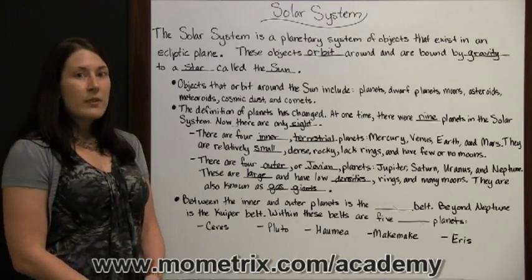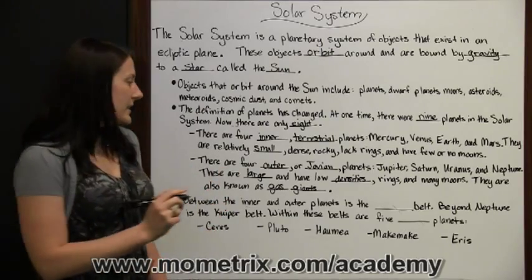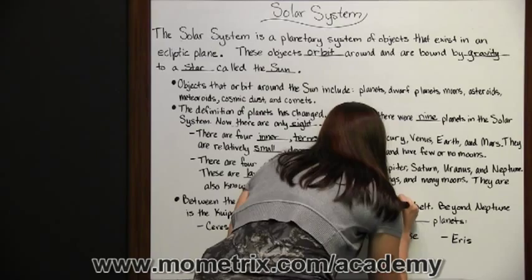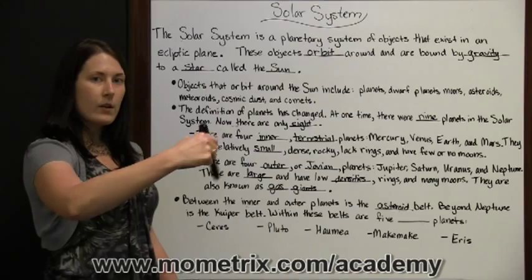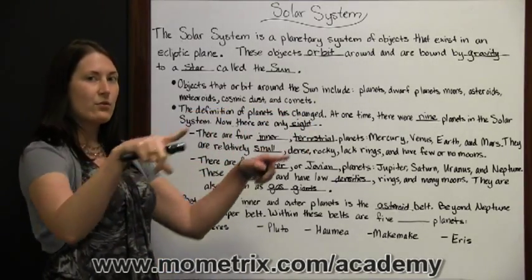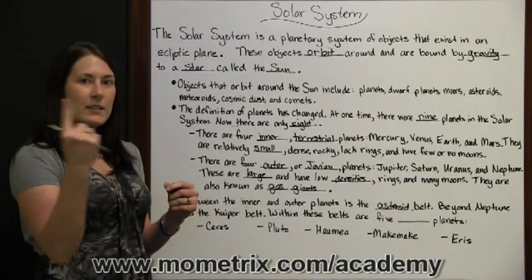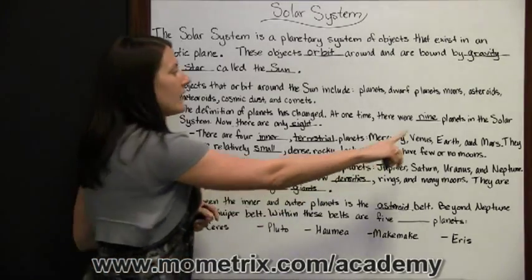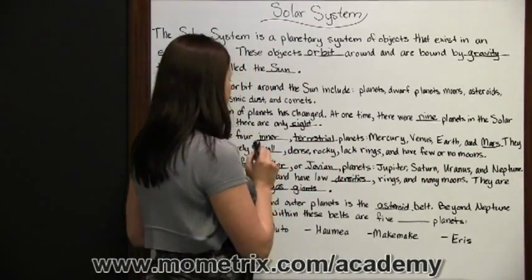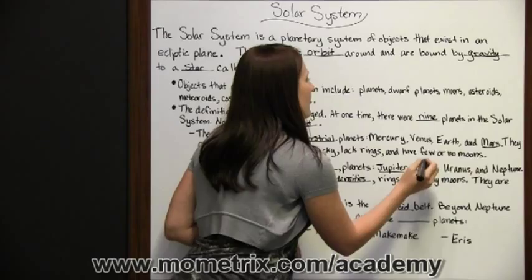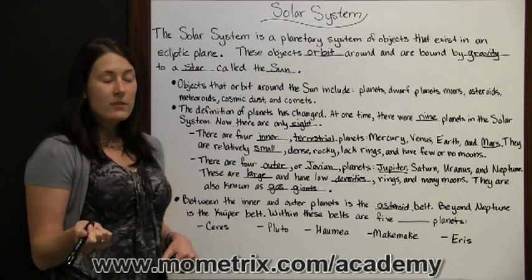Between the inner and outer planets is the asteroid belt, which also orbits the Sun. It sits between the orbits of Mars — the furthest inner planet — and Jupiter, the closest outer planet.